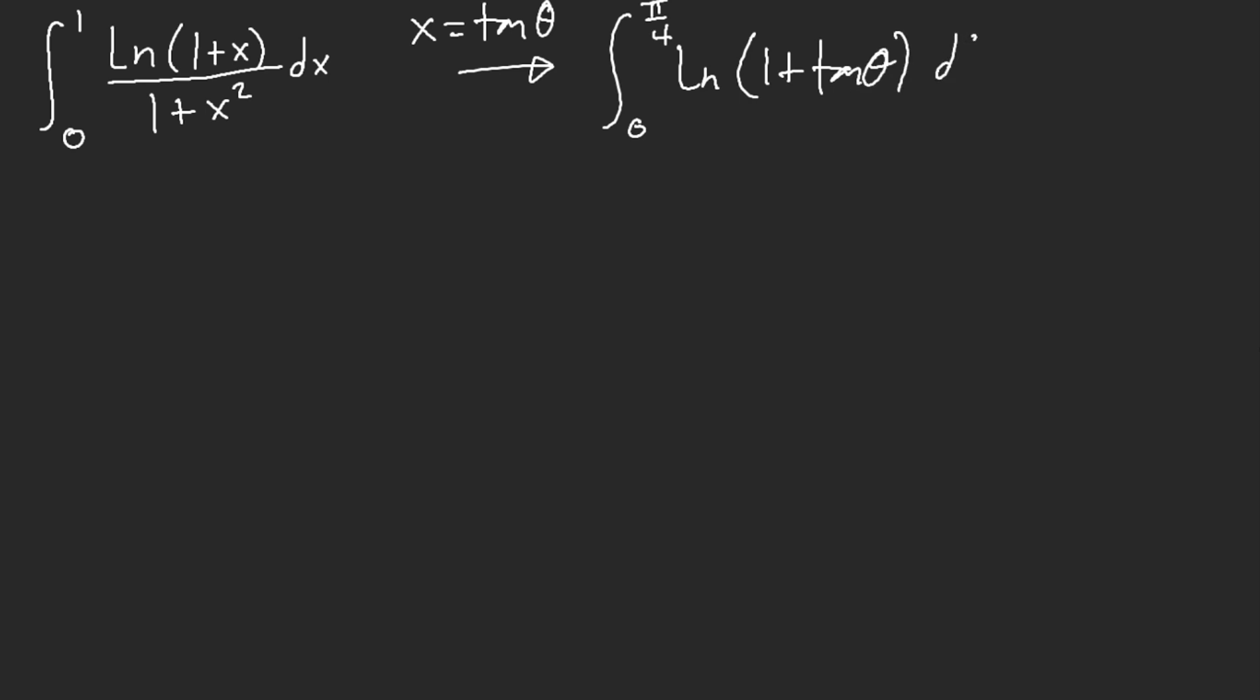Now, this is where the trickiness comes in. We're going to use evil queen's rule, meaning we're going to let u equal pi over 4 minus theta. Now, why on earth are we doing this? This is insane, right?